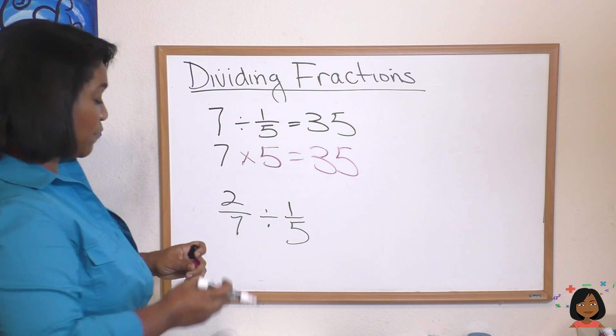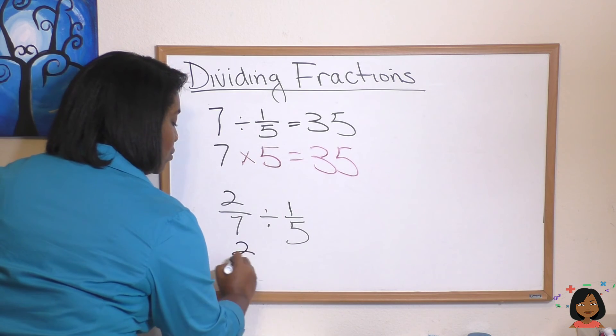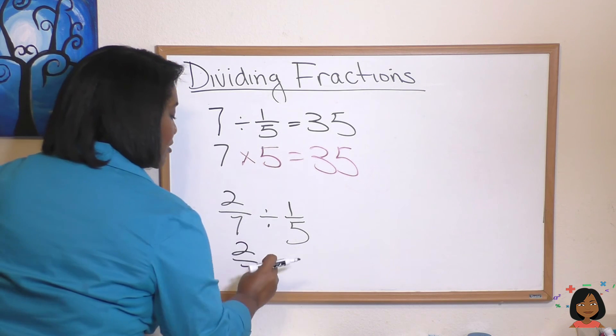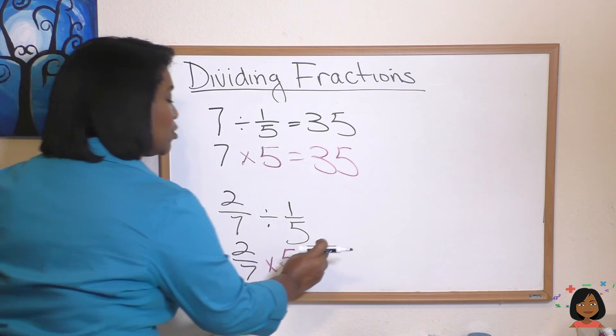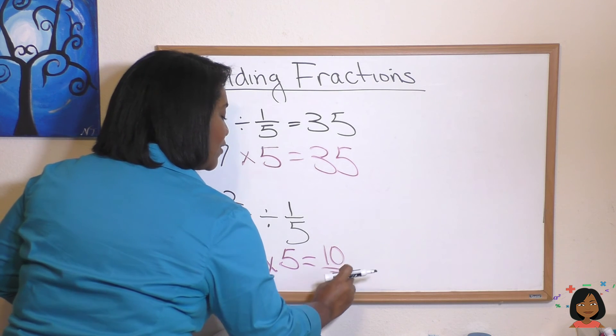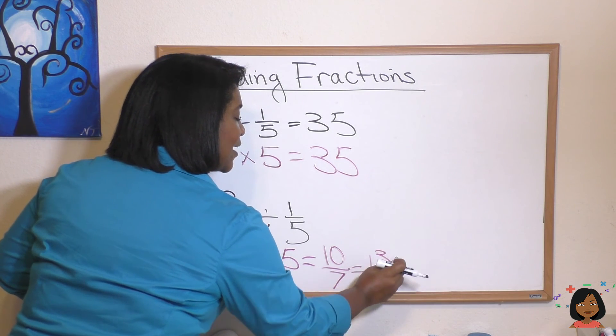It also works when there's a fraction over here. So we're going to just do the math. Two-sevenths multiplied by five. Multiply your numerators. Five times two is ten. Then we have seven on the bottom which gives us one and three-sevenths as an answer.